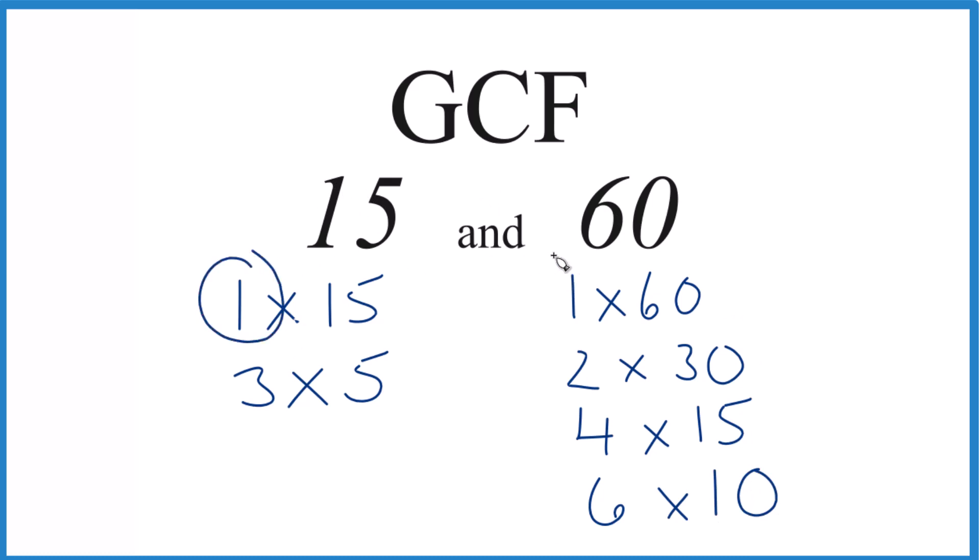So in common, we have 1. They both have a factor of 1. Then there's no 3, 5, but 15. We have 15 for both 15 and 60, so that is the greatest common factor. So in answer to our question, the GCF for 15 and 60 is 15.